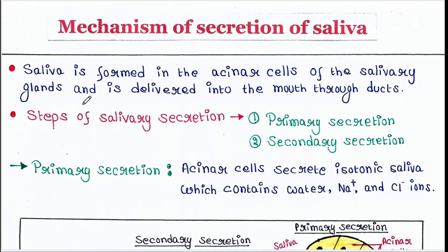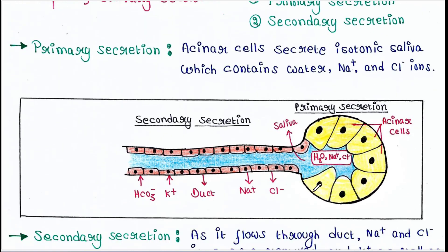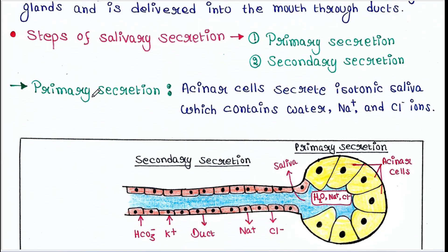In this picture you can see these are the acinar cells — they release saliva, and the saliva gets modified in the duct and then it is delivered in the mouth. This is the overall process. Salivary secretion has two main steps: primary secretion and secondary secretion.